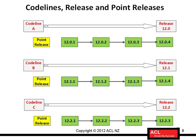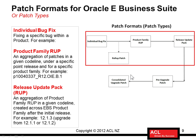The second level is something called a point release. For instance, in 12.1 you have point releases 12.1.1, 12.1.2, 12.1.3, and so on. Each of these point releases will actually contain a consolidated amount of patches for all the products. At the moment, what you need to understand is the relationship between these three things: a release, the code line, and a point release. Now let's go back to the presentation and visit the different types of patches one by one.